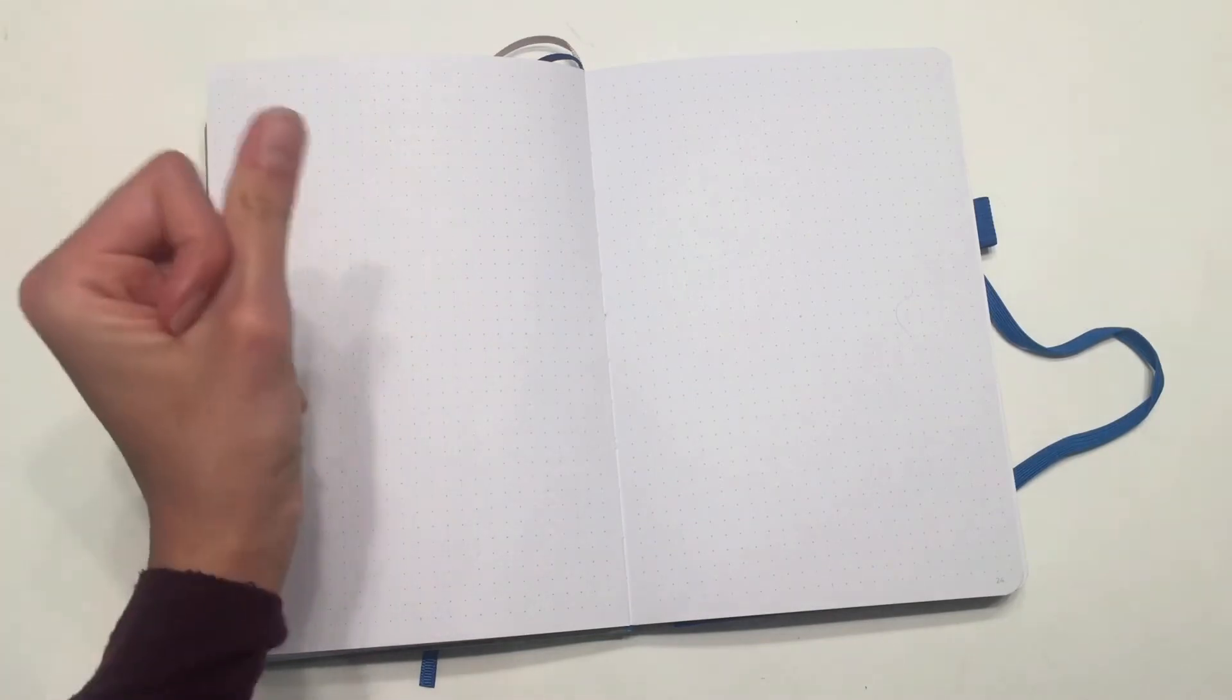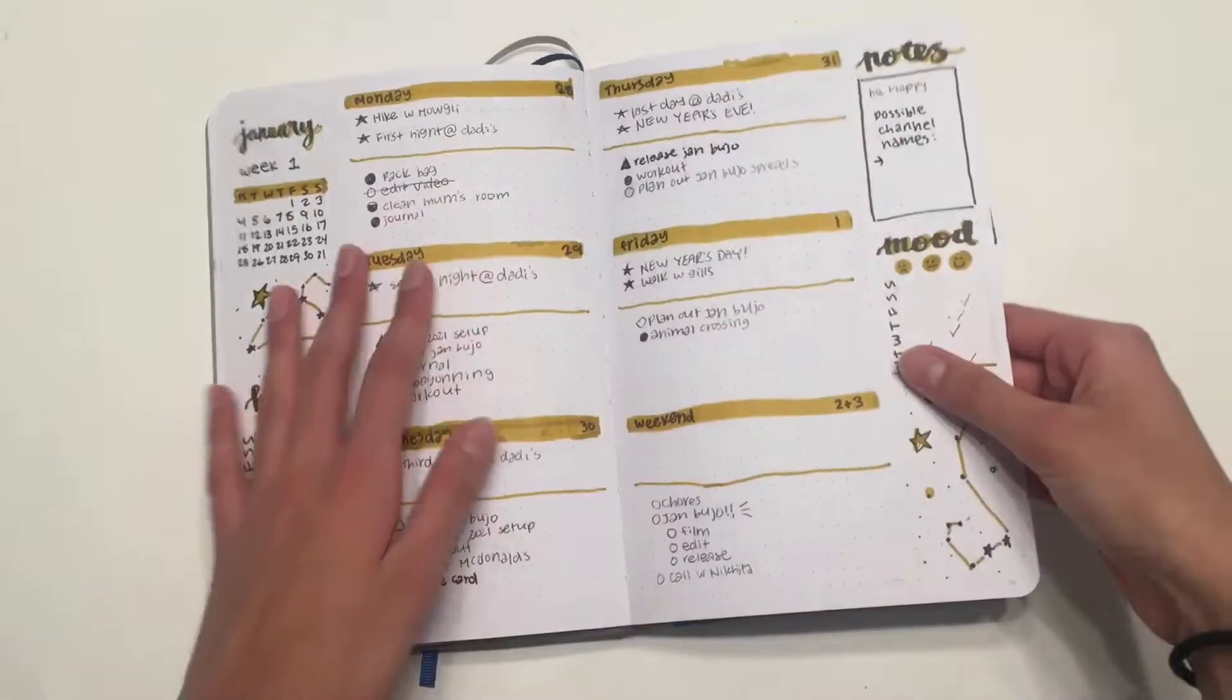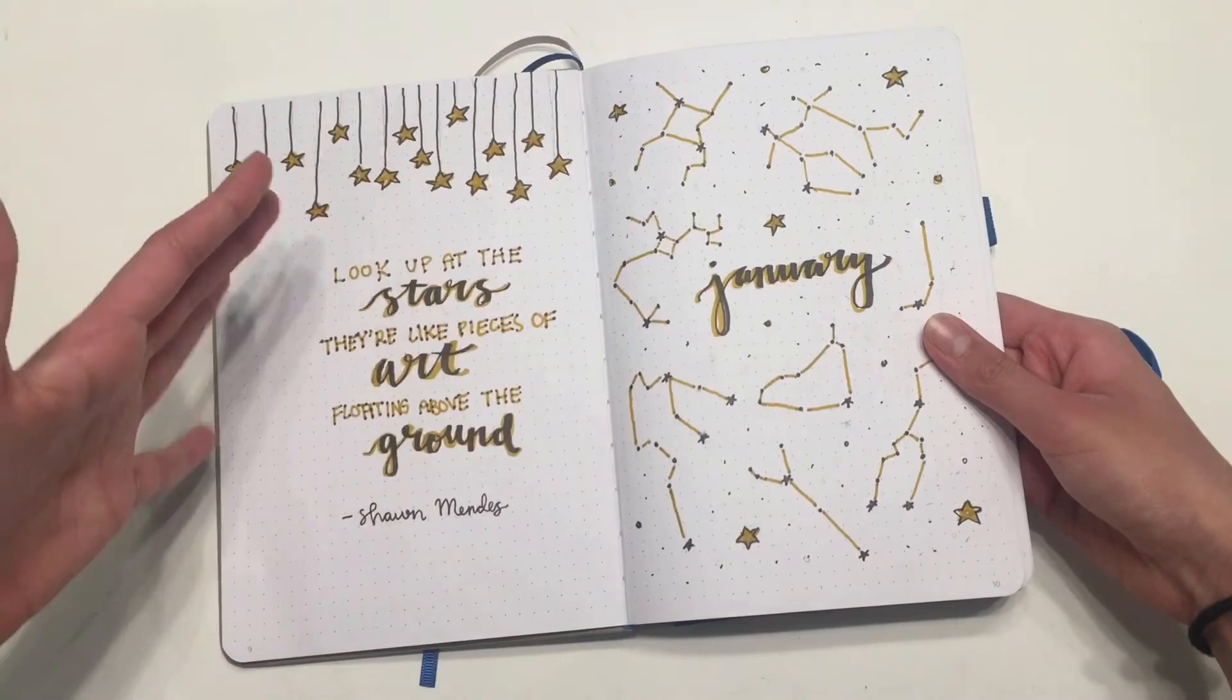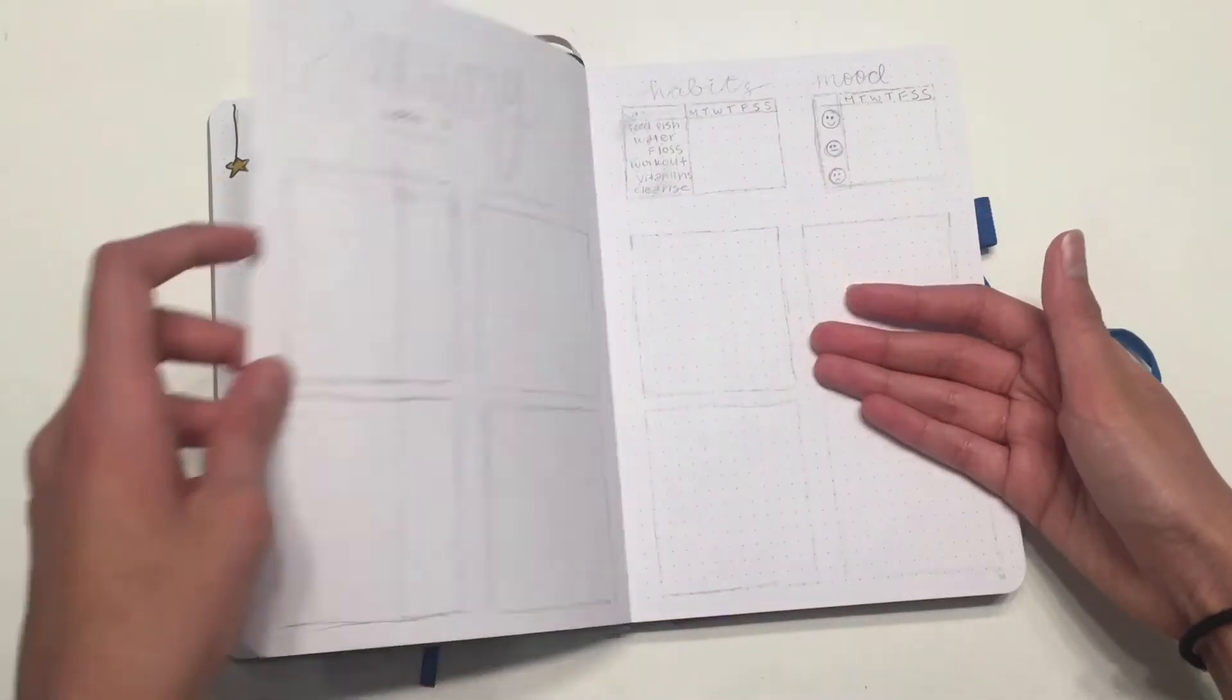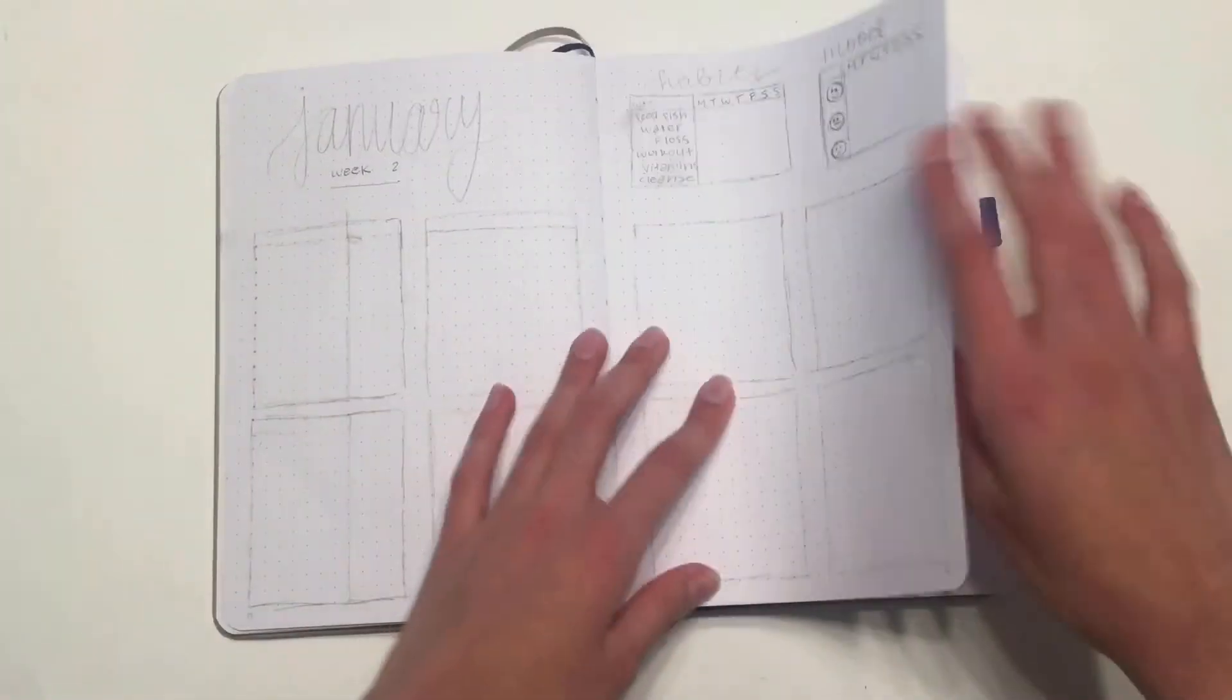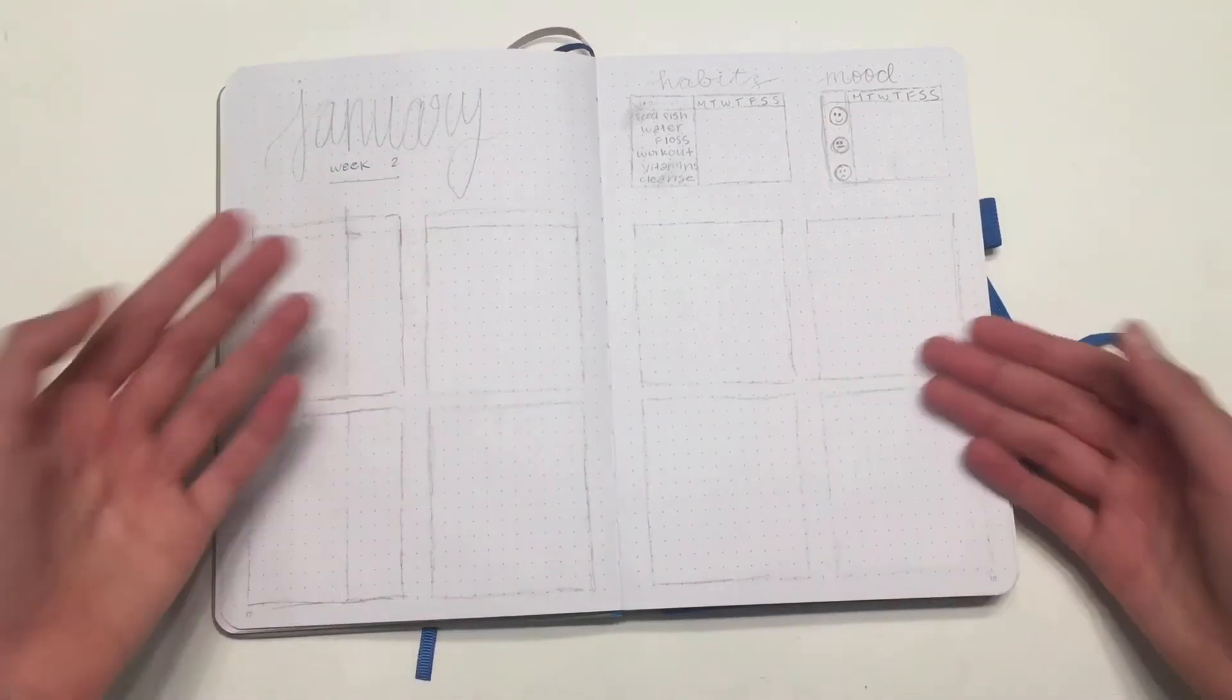So without further ado, let's get started. Now let's start on our very first weekly spread. This one was my weekly spread in my plan with me video. Check that out if you haven't already. I'll just give you some context. This month's theme is constellations and calligraphy, and to make this video flow a little better, I created some layouts already made so we can move along quick.